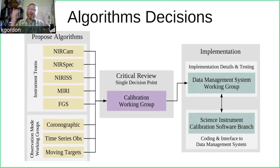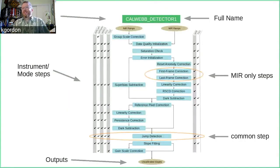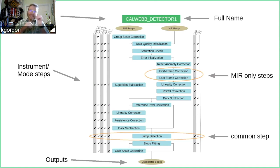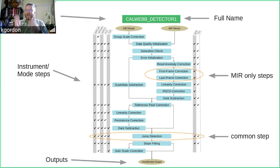Here's what the first stage of the pipeline looks like. All data goes through 'caldetector1,' where we go from raw data — and the raw data is a ramp, since the near and mid-infrared detectors allow non-destructive sensing of how many electrons are in a pixel. All instruments go through this stage, and you can see from the diagram which steps are common to all instruments, like jump detection.